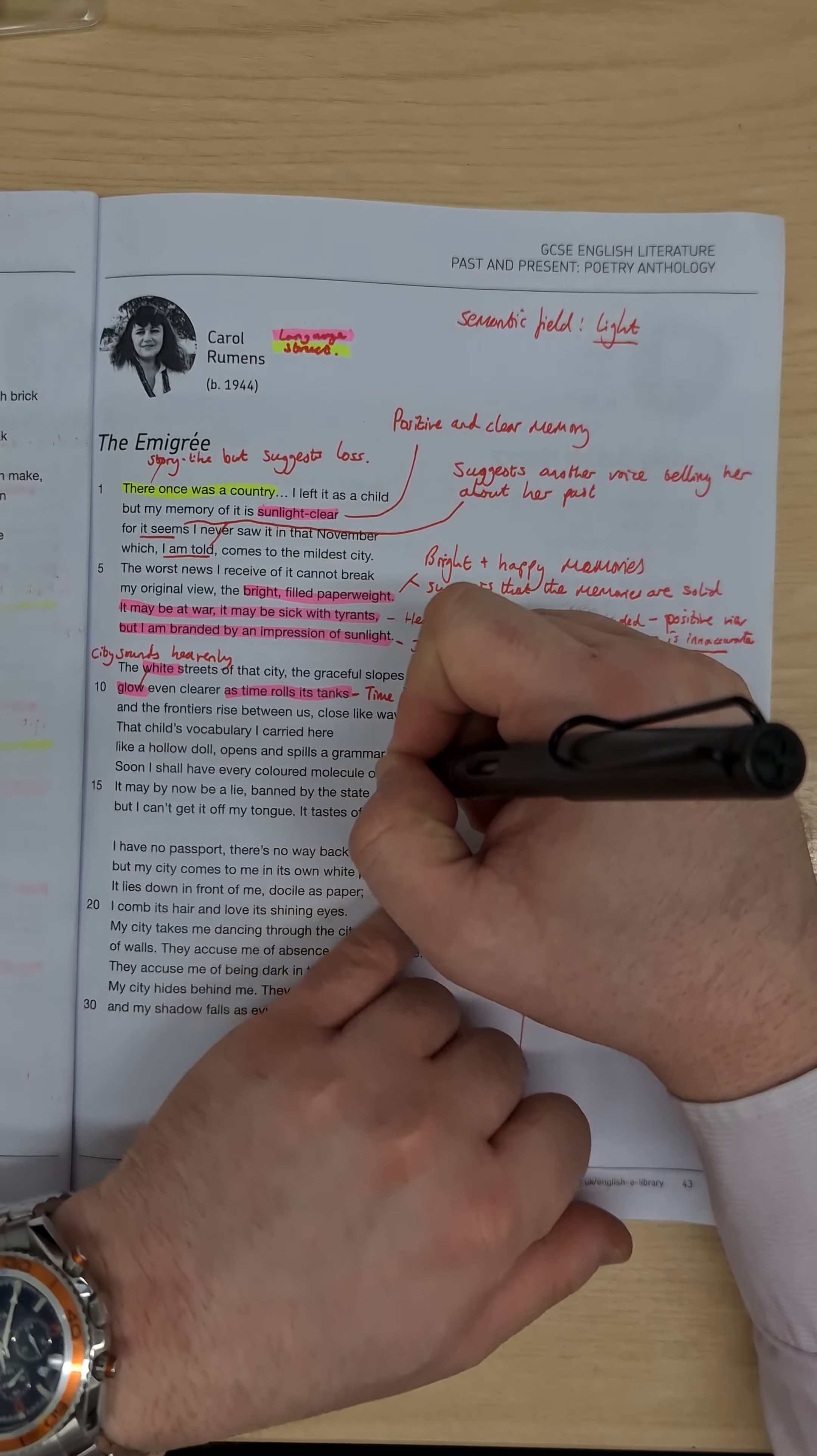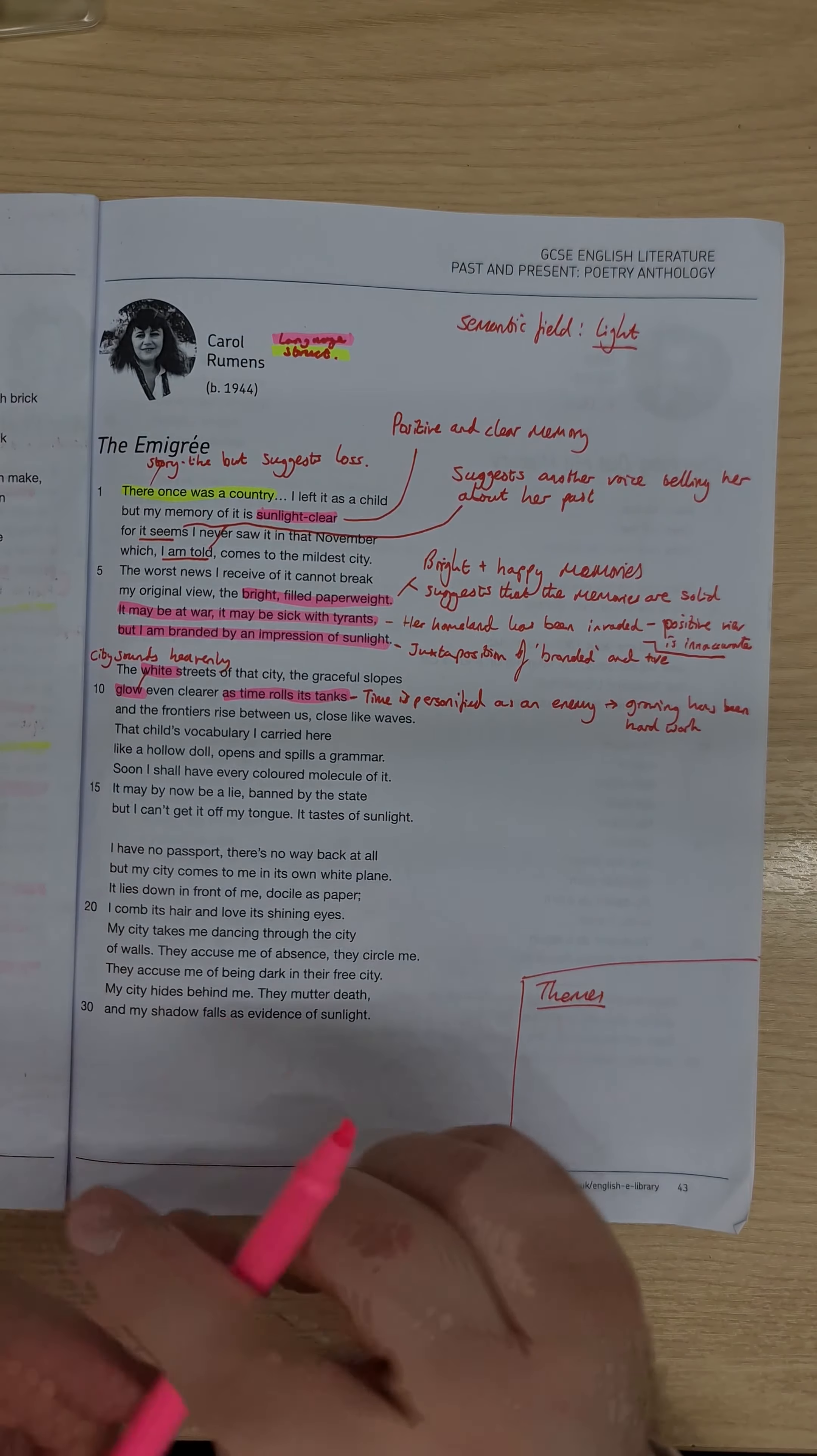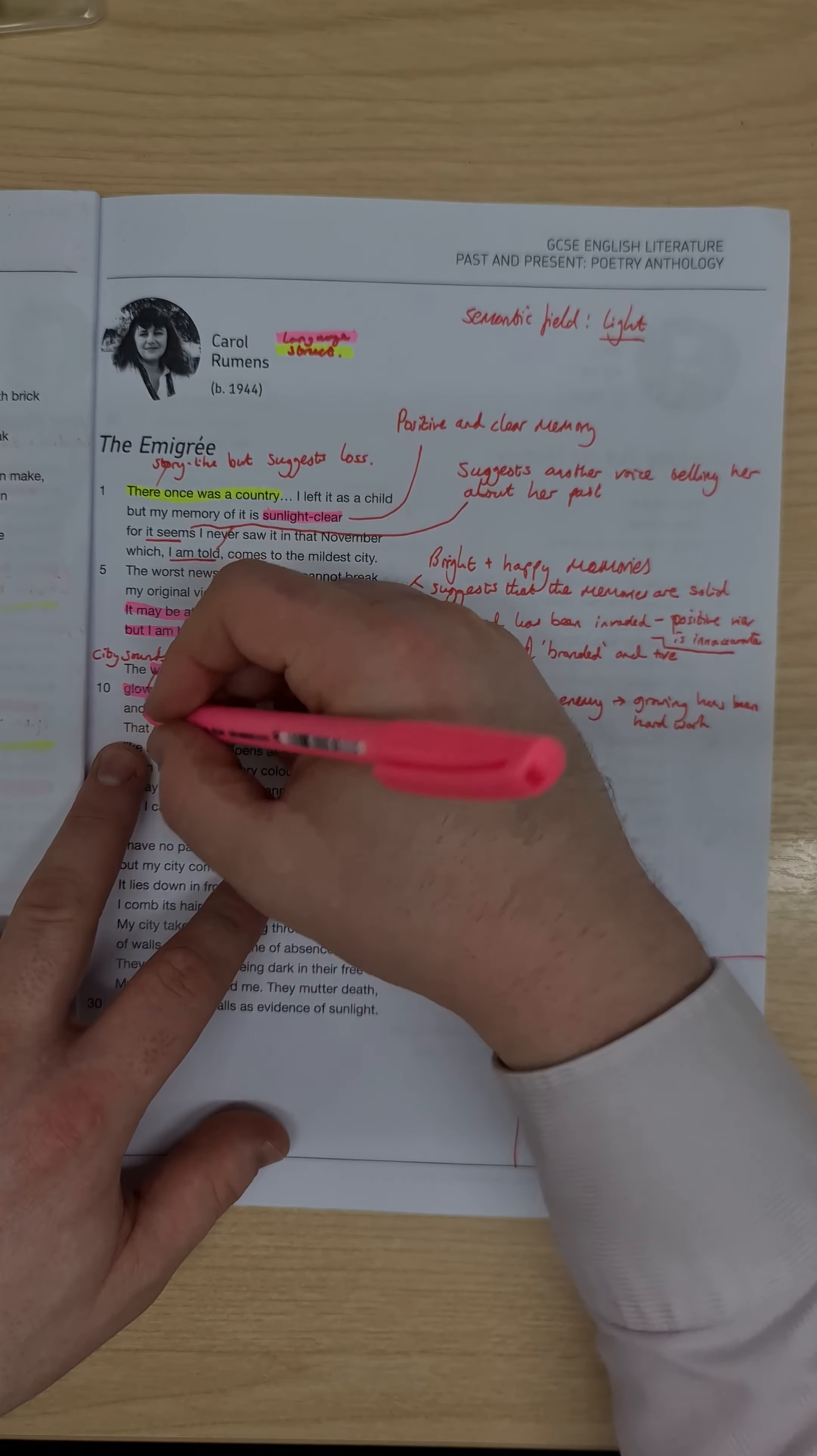And follow it, like almost to contrast that, we have this child's vocabulary. And it seems to refer to the language of her childhood. It's a metaphor that makes the language again seem almost precious. I carried here, that child's vocabulary, I carried here like a hollow doll. And that's an interesting idea, this hollow doll that that she's been told something else. So it's not what it seems.